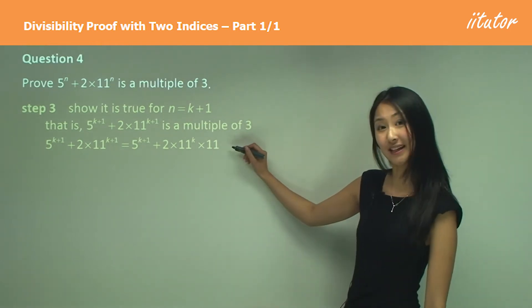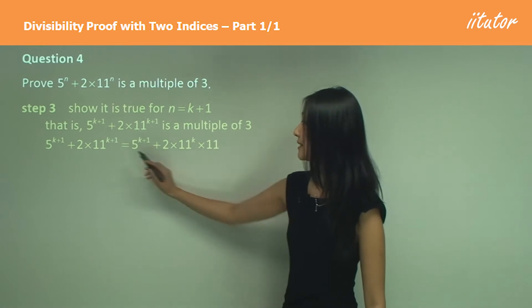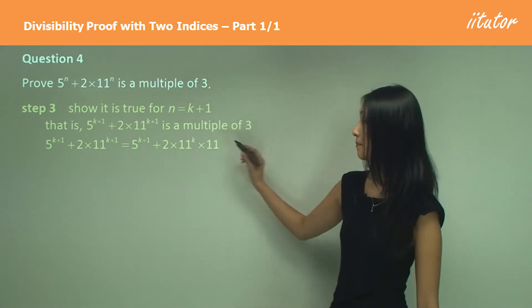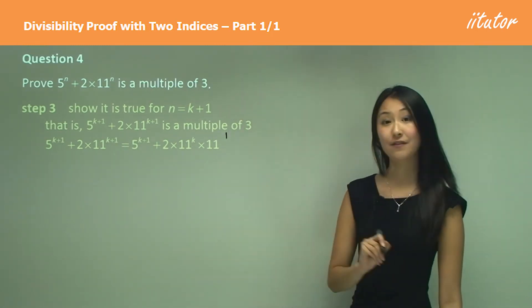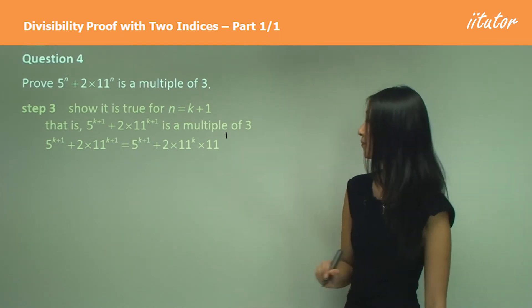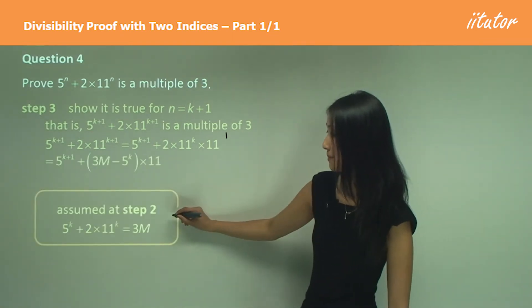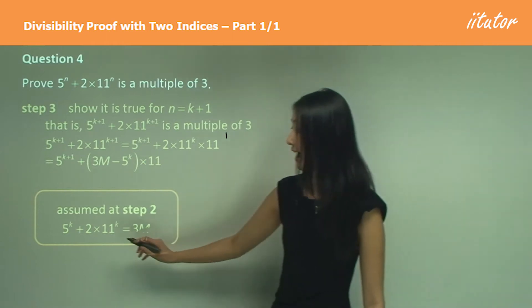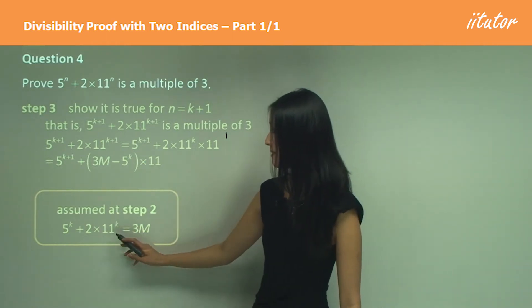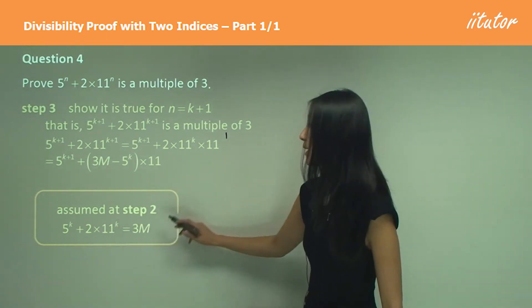Here we've chosen 11^k, so we split this into 11 to the power of k and then 11 to the power of 1. Now we know from step 2 that 5^k plus 2 times this equals 3m.